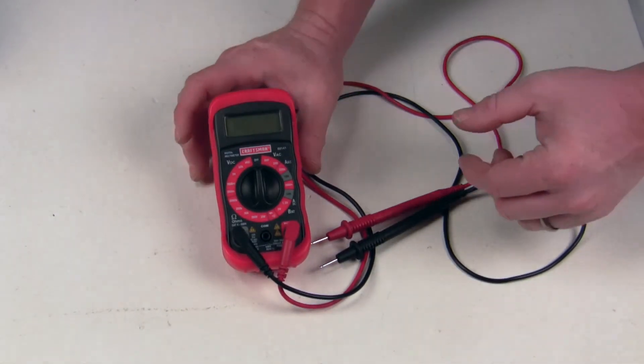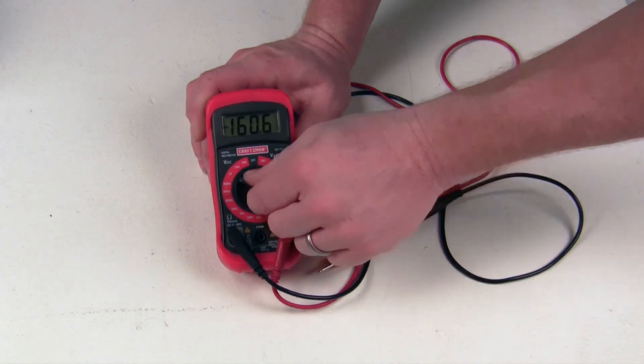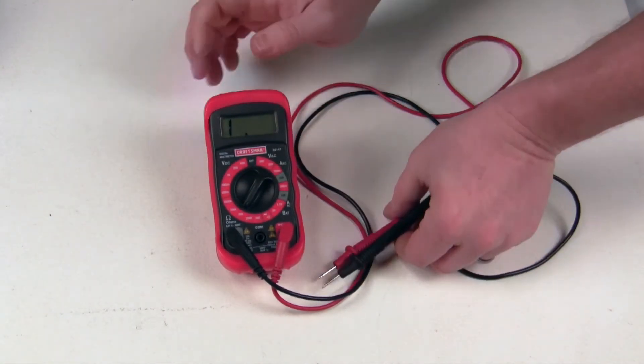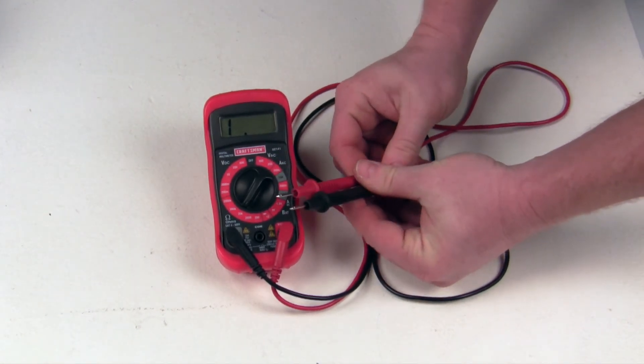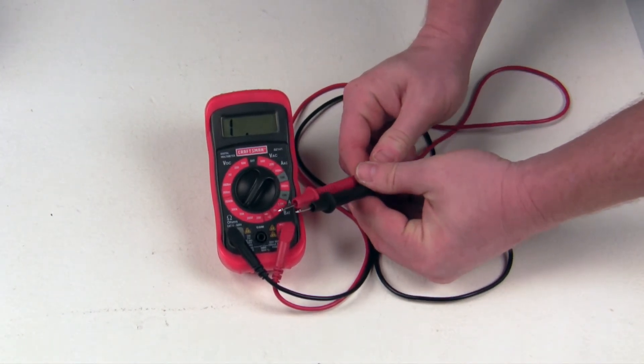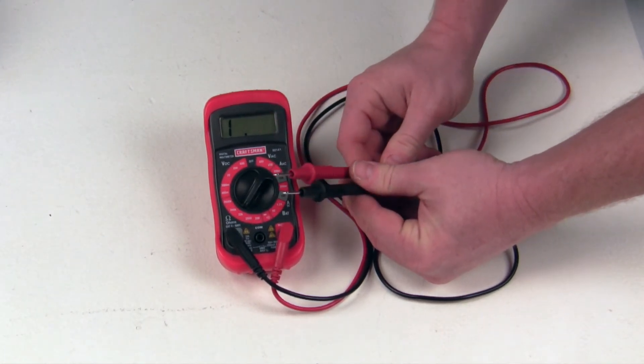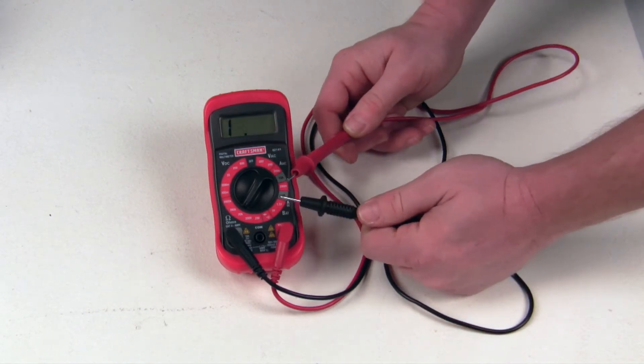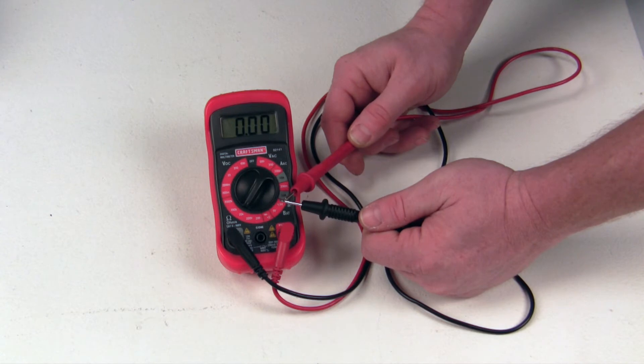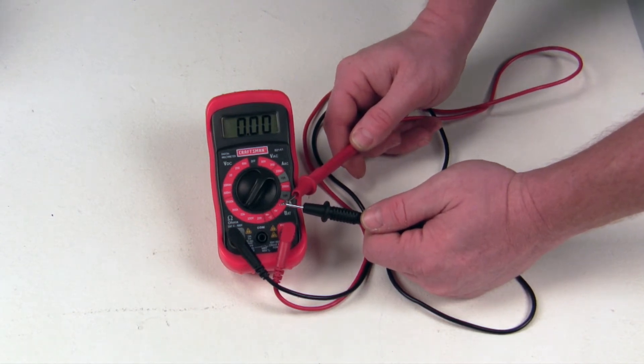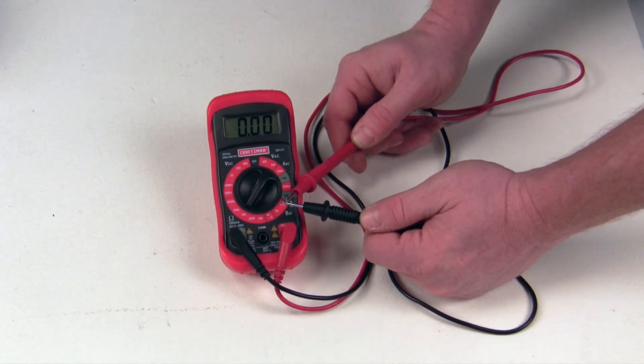The last thing we're going to check is to make sure the meter is reading ohms properly. We're going to set it to ohms. When the two leads are open and they're not touching each other, that's an open circuit. Some meters will have an OL, which means out of limit. This particular meter shows a one when it's an open circuit. When you touch these two leads together, you're giving it continuity. It's now a closed circuit. You should get three zeros on your meter, which is usually an indicator that you have a good closed circuit.